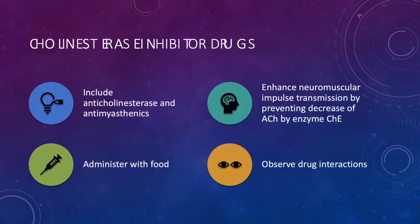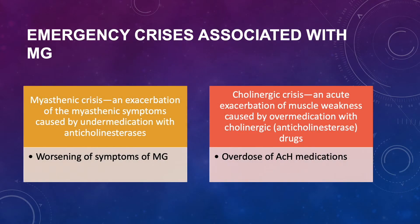Myasthenia gravis can be affected by the level of neurotransmitters, so remember that ACH stands for acetylcholine and CHE stands for cholinesterase. Cholinesterase inhibitor drugs include anticholinesterases and antimyasthenics. They enhance neuromuscular impulse transmission by preventing the decrease of ACH by the enzyme CHE. You should administer these medications with food, and there are many drug interactions, so you should observe for those. The first emergency crisis associated with myasthenia gravis is myasthenic crisis — an exacerbation of the myasthenic symptoms caused by under-medication with anticholinesterases, resulting in a worsening of MG symptoms.